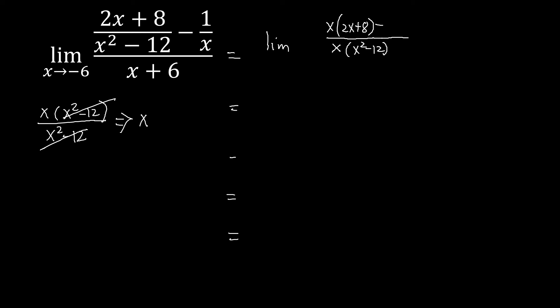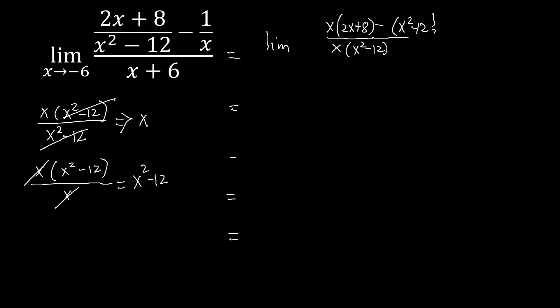Then we have minus. For the second part, we go back to the LCD: x times (x squared minus 12), divided by the next denominator which is x. We can cancel the x, leaving x squared minus 12. Since the numerator is 1, the answer for the second fraction is x squared minus 12.